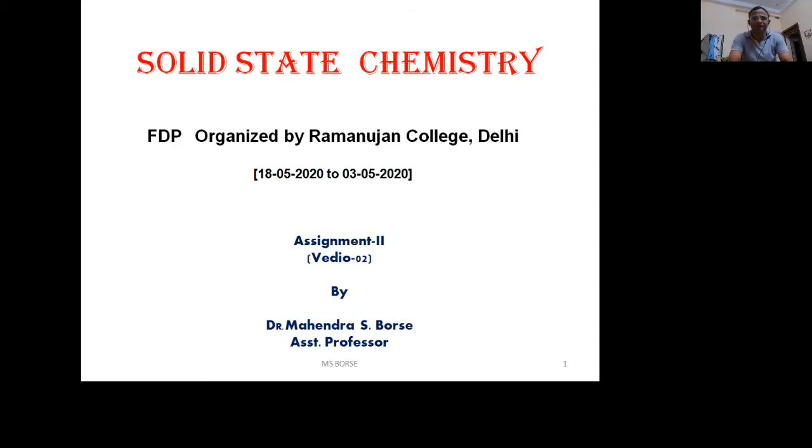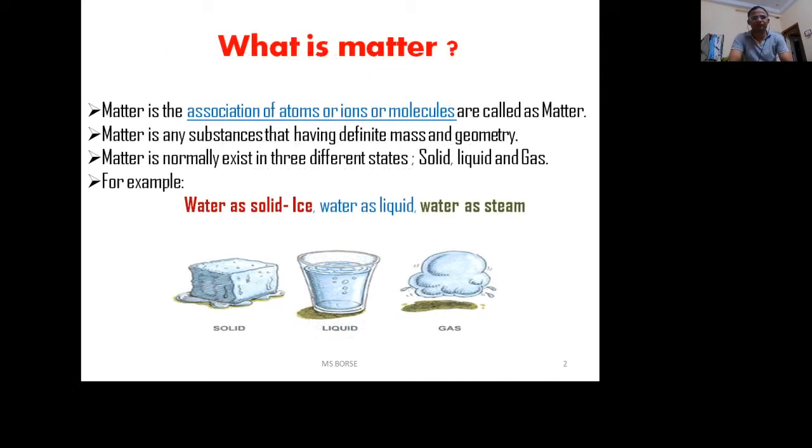Good morning students, today we will learn solid state chemistry. First, what is matter? Matter is the association of atoms, ions, or molecules. Matter is any substance that has definite mass and geometry.